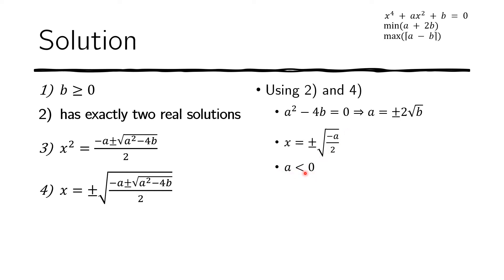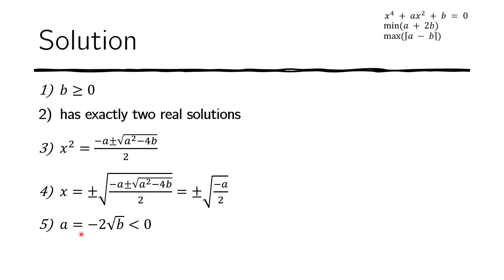Now we add condition five: A equals negative 2 times the square root of B, and this must be less than zero. Because the discriminant is zero, we also know that x equals plus or minus the square root of negative A over 2. With these conditions established, we're ready to look for the minimum of A plus 2B.